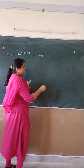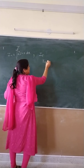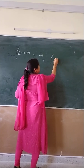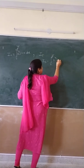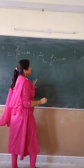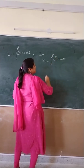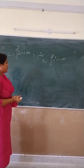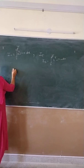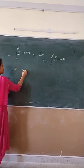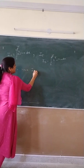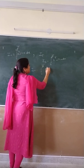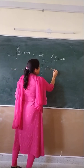What this means is you have to find I₅, which is the integration from 0 to π/2 of x raised to power 5 times sin x dx. This is what we have to evaluate. So Iₙ is equal to integration from 0 to π/2 of x raised to power n times sin x dx.